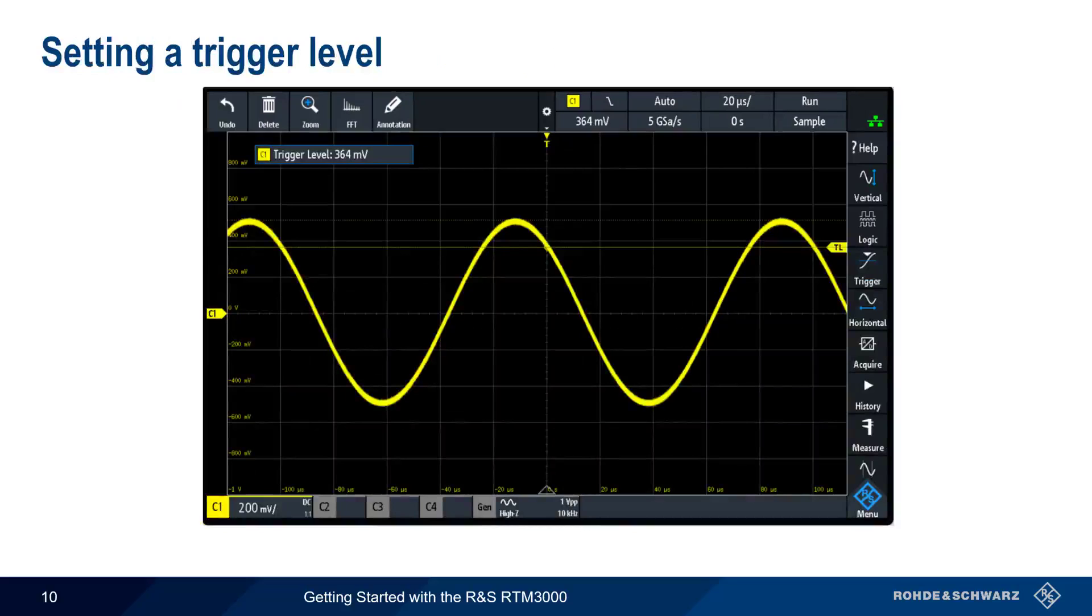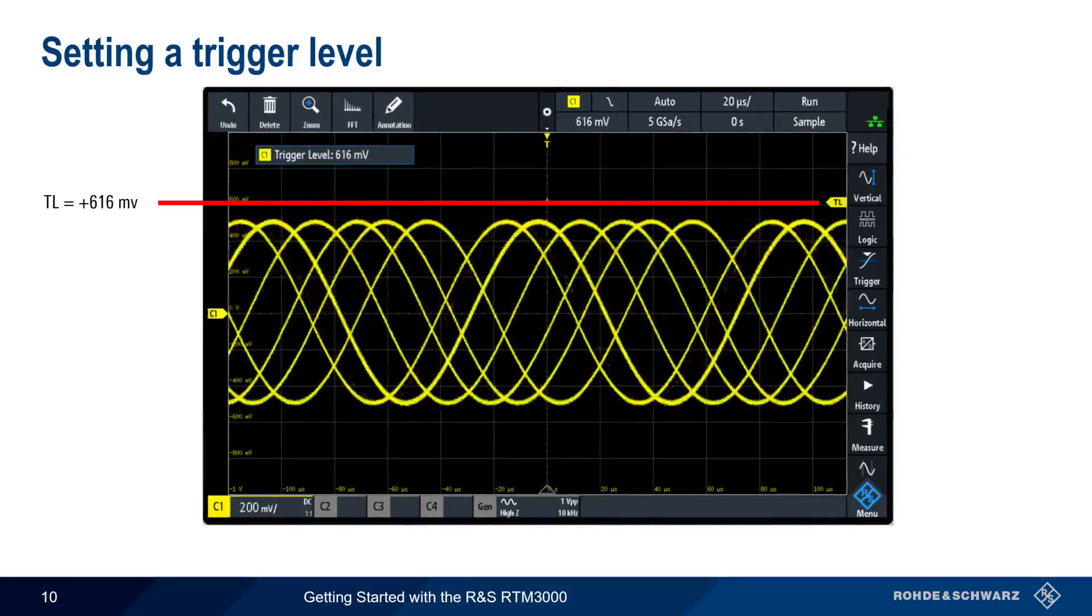It's very important to set the correct trigger level when working with either periodic or single shot waveforms. The good news is that for many periodic waveforms, we don't have to be terribly precise in setting our trigger level. In this example, if we set our trigger level anywhere between plus 360 and minus 360 millivolts, we still get a proper trigger on this periodic waveform. However, if we increase the trigger level too high, we fail to get a stationary or stable waveform on the screen.